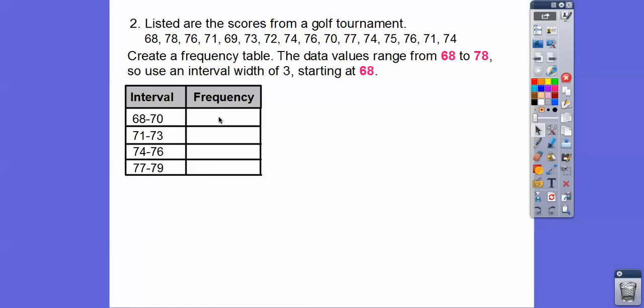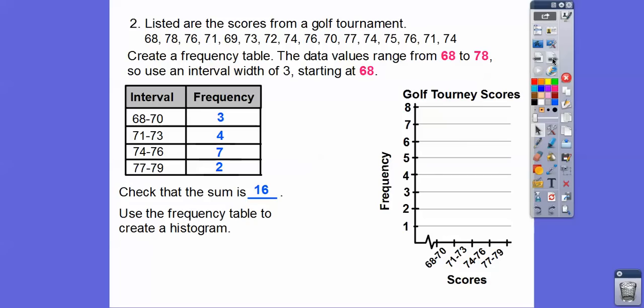Then we're going to count all the ones that are in 68 to 70. So you'll see I highlighted them up there. So there they are. 68, 69, 70. Three of them. All the ones with 71 to 73. There were 4 of them. You can see them highlighted up there. 74 to 76 are 7. And then finally 2. And then let's check that the sum is the same as these guys. That they add up to 16 right there. There are 16 numbers. So the frequency has to be the same as how many there were up here.